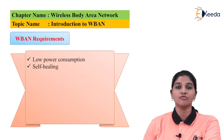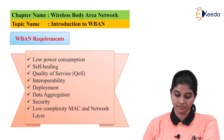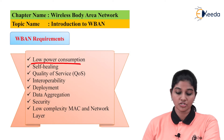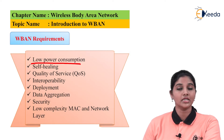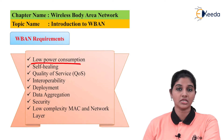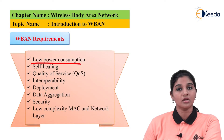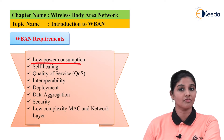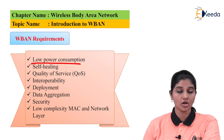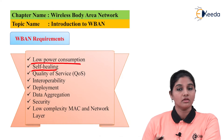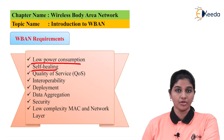Now let's look at the requirements of the wireless body area network. The first requirement is low power consumption. As the sensors are placed inside the human body or worn by the human being, the power requirement should be less because low power consumption results in a longer battery life. As the wearable devices and sensors placed inside the human body are battery-operated, it is very important that the nodes consume less power so that they can use the battery for a longer period of time.